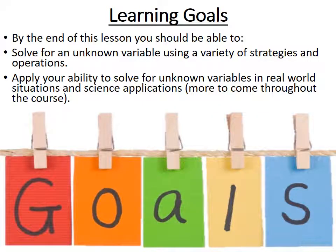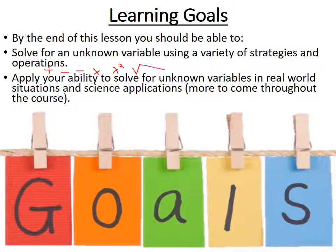Here are your learning goals. You'll need to know how to solve for an unknown variable using a variety of strategies and operations — things like addition, subtraction, division, multiplication, squaring, and square roots. You'll also be able to apply your ability to solve for unknown variables in real-world and science applications, with more science applications coming as we move through the unit.